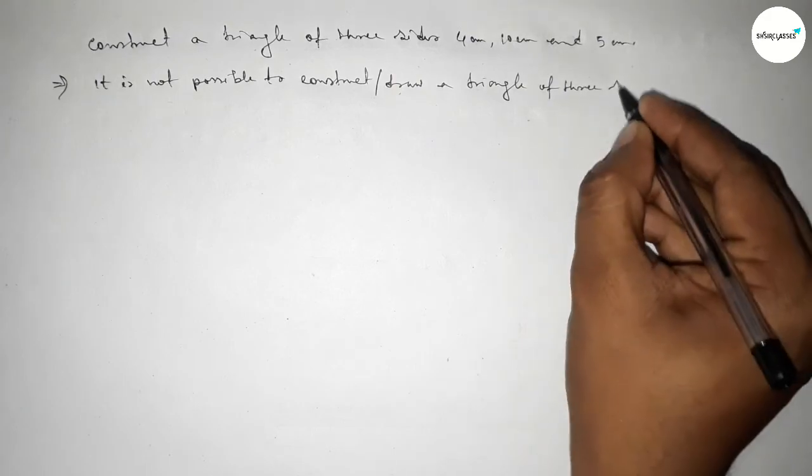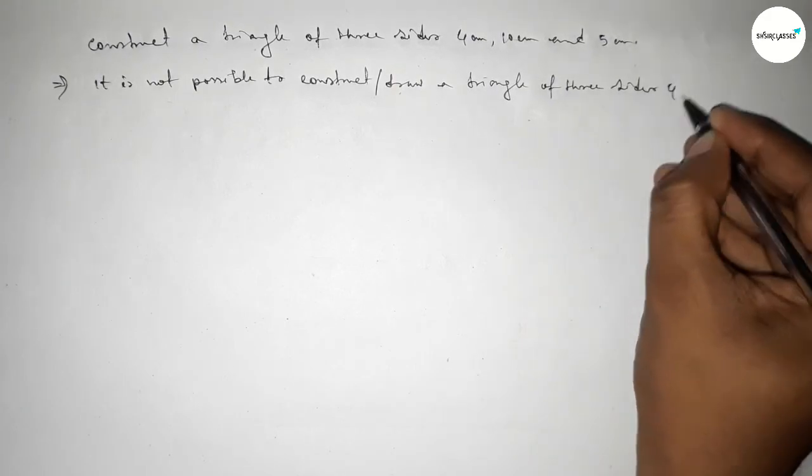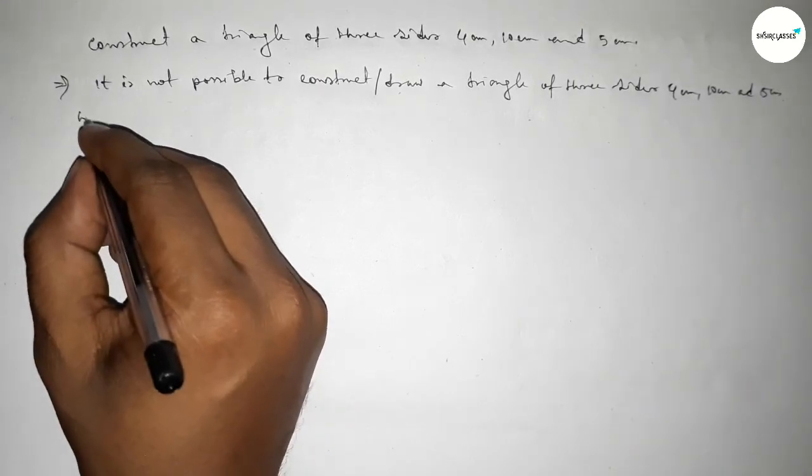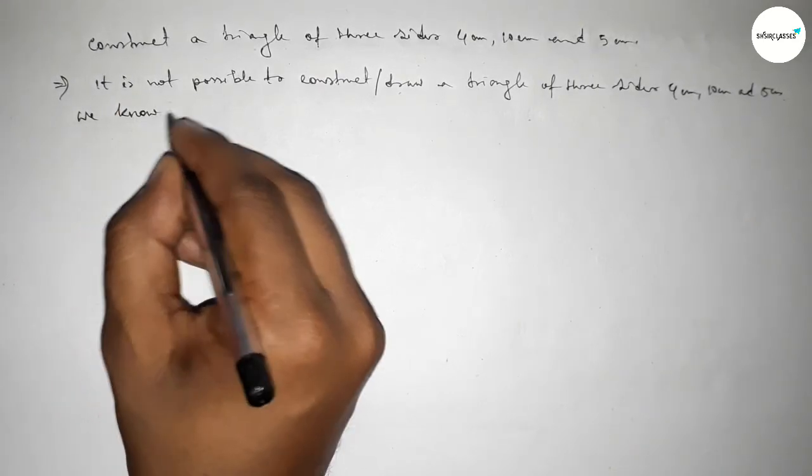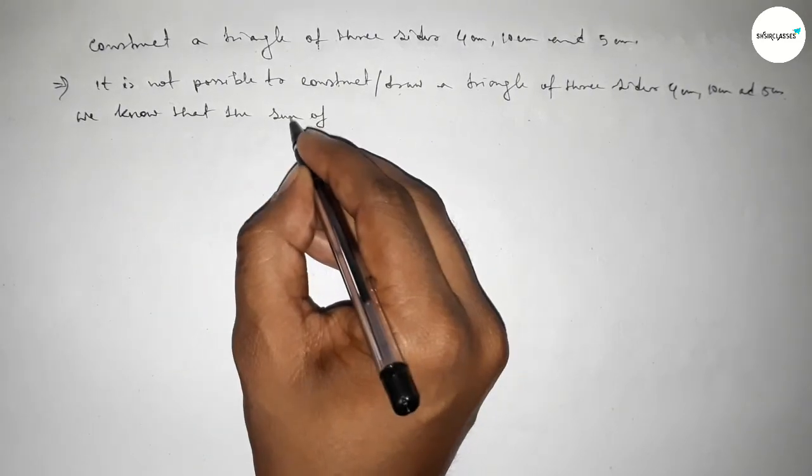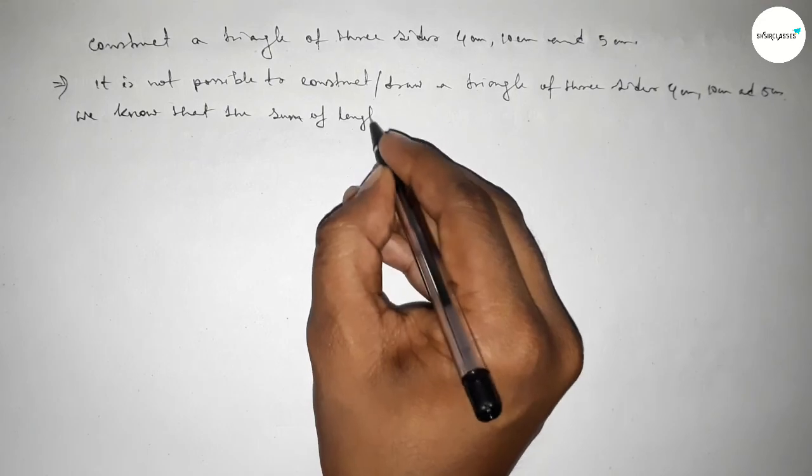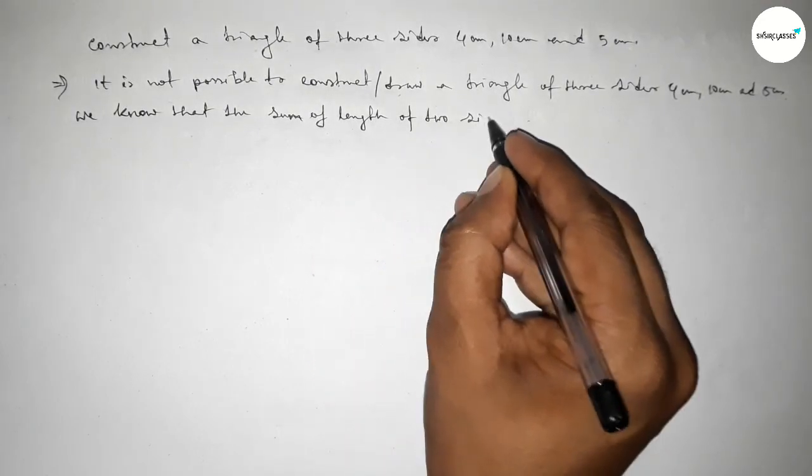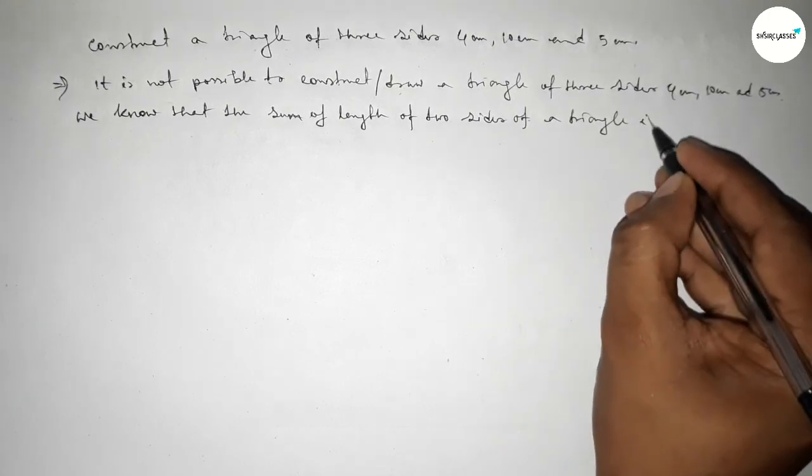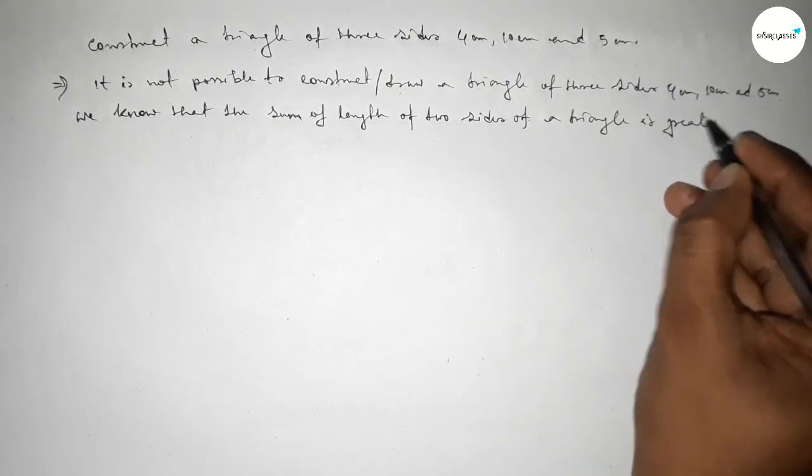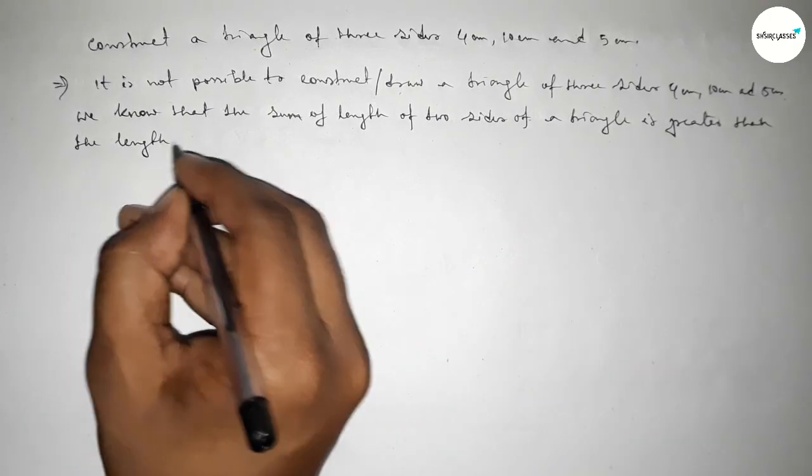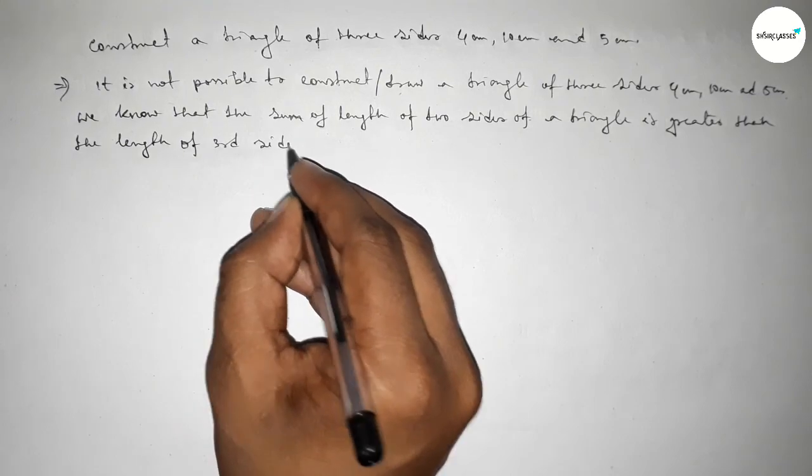4 centimeter, 10 centimeter, and 5 centimeter, so we cannot construct a triangle because we know that the condition is: the sum of length of two sides of a triangle is always greater than the length of the third side of the triangle. So this is the condition to construct or draw a triangle.